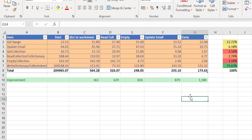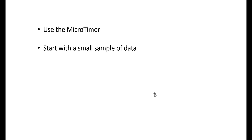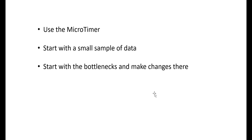If you're having trouble with slow code and want to identify the problem areas, here are four tips to follow. First, use the micro timer — it allows you to see the speed on a smaller set of data, so start with a small sample. If you're having problems with 50,000 records taking 30 minutes, start with a much smaller sample so your code runs quickly and you can identify problems faster. Second, start with the bottlenecks — focus on the area that's really slow first for an easy win. Third, close all other applications, as open applications can significantly slow down how Excel runs and distort your speed test results.